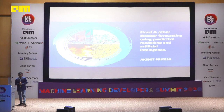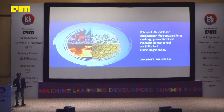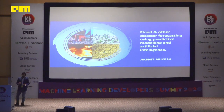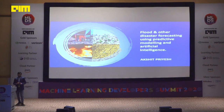Let's take one example — Odisha. Around 20 years back, a severe super cyclone hit the coastal plains of Odisha, resulting in 10,000 casualties, over 3.5 million houses completely washed away, many villages gone, and 25 lakh people stuck due to waterlogging.